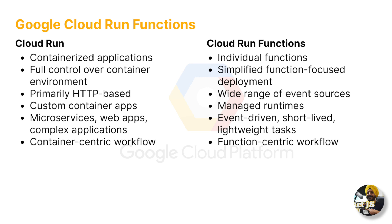Cloud Run is primarily HTTP-based — it functions like a webhook where every invocation goes through an HTTP endpoint, making it more like a platform-as-a-service and usable as an API layer alongside Kubernetes Engine or Compute Engine. Cloud Run Functions, on the other hand, can be invoked by a variety of event sources — about 70 available within Google Cloud — not necessarily HTTP, though HTTP requests are supported. The primary use case is triggering from another service via an event.